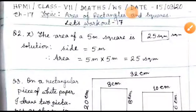Students of class 7, today we are going to work out the next few sums of chapter 17, areas of rectangles and squares. Let's work out exercise 17 — come to question number 2.